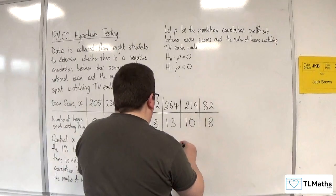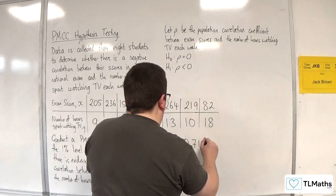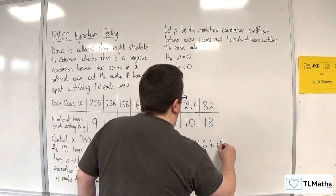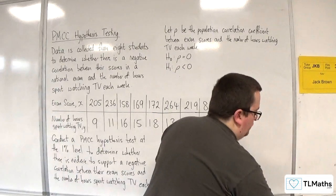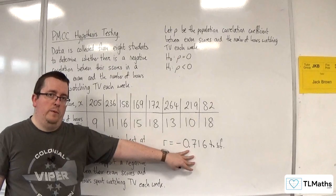So we should be getting minus 0.716 to 3 sig fig. So that is the sample product moment correlation coefficient.